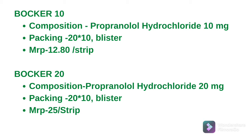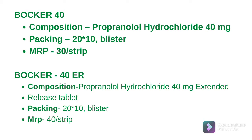Next is Boker 40 — composition is propanolol hydrochloride 40 mg, packing 20×10 blister, and MRP is 30 per strip. Last is Boker 40 ER — composition is propanolol hydrochloride 40 mg extended release tablet, packing is 20×10 blister, and MRP is 40 per strip.